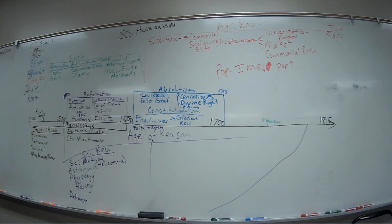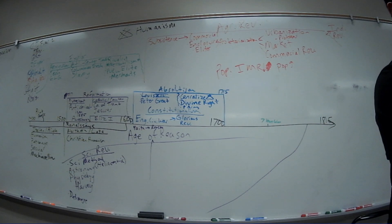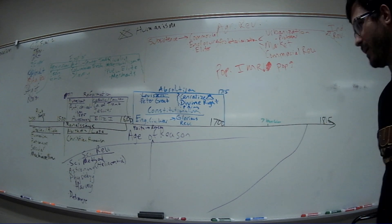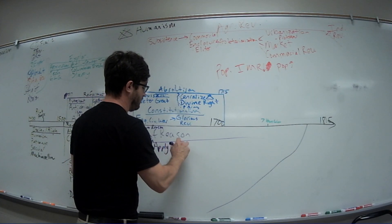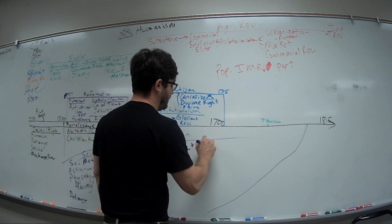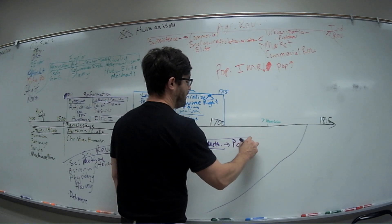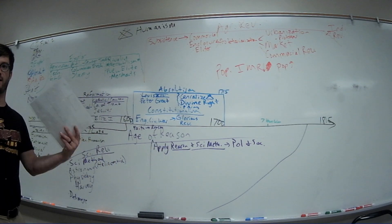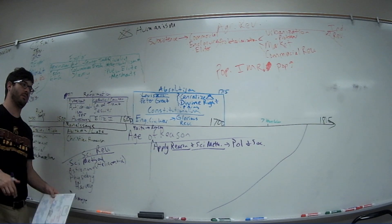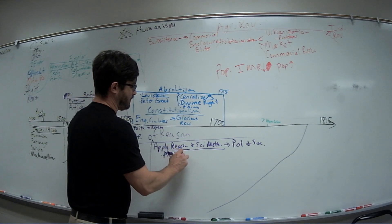The last section before French Rev is the Age of Reason. There are essentially two parts: the scientific revolution and the Enlightenment. The scientific revolution is all about faith to reason — people start using the scientific method to understand life instead of faith. It's based on observation and empiricism, not feelings.